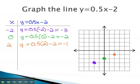Notice we can connect these dots using a straight line. This line means any point on the line, for example (4, 0), will make this equation a true statement.